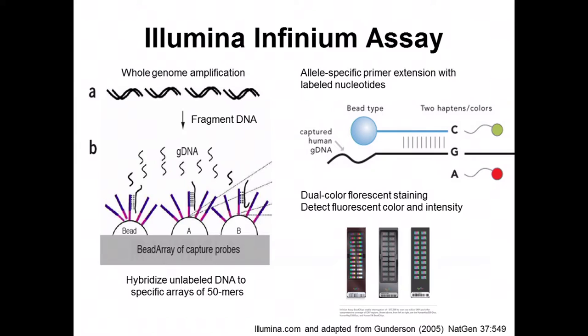A couple of strategies exist for the genotyping process. In one platform, whole genomic DNA is used for the assay, and allelic discrimination uses a short primer extension — a primer sits at the variant position and the allele incorporated depends on the allele present in the captured human genomic DNA. A visualization step using fluorescent staining enables high-throughput analysis of many variants on a given array.